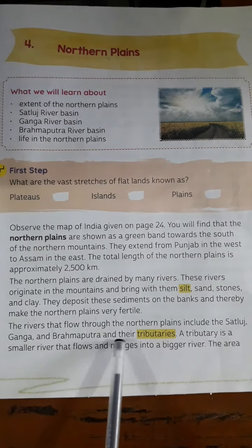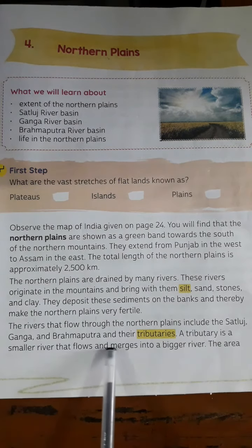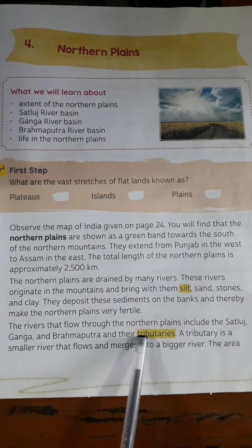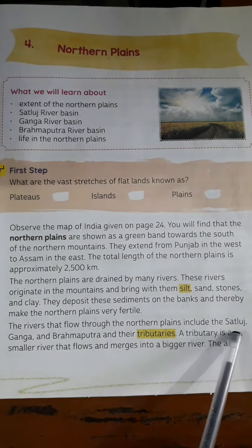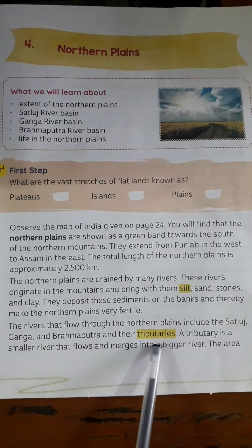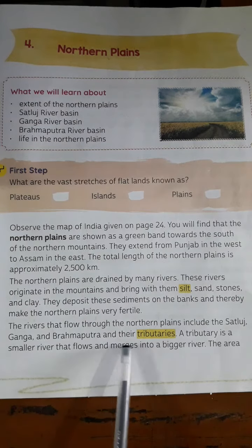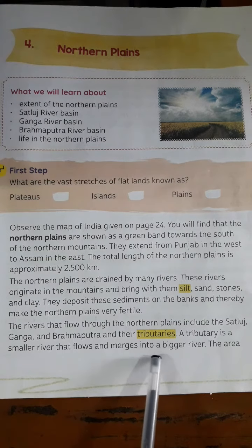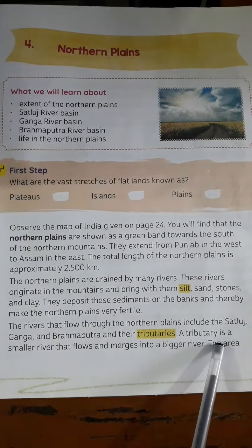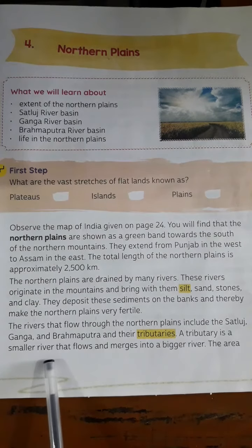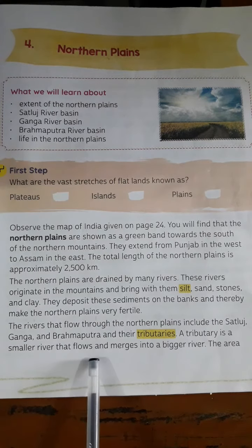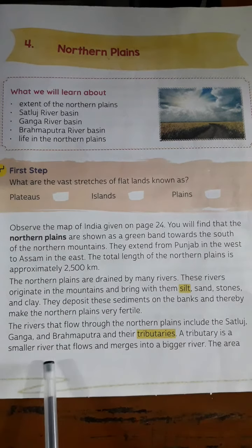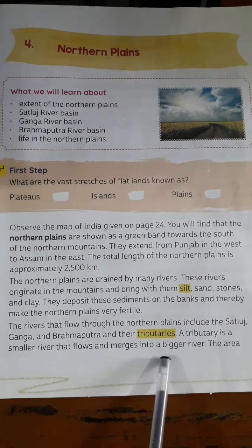The rivers that flow through the Northern Plains include the Satluj, Ganga, and Brahmaputra, and their tributaries. A tributary is a smaller river that flows and merges into a bigger river.